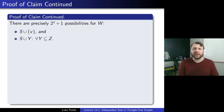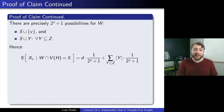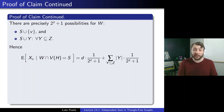Now we calculate the conditional expectation E[Xv | W ∩ V(H) = S]. The first term contributes d only in the case W = S ∪ {v}, which occurs with probability 1/(2^z + 1). For the other 2^z cases (where v is not in W), the second term contributes |Y| (the number of neighbors in W). The sum over all subsets Y of Z of |Y| equals z times 2^(z-1), so the total contribution from the second term is z · 2^(z-1) / (2^z + 1). Combining, we get d/(2^z + 1) plus z · 2^z / (2·(2^z + 1)).